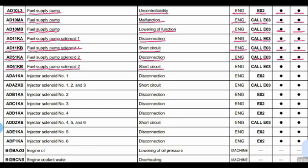Code AD51KB: the part is fuel supply pump solenoid 2 and the problem is short circuit. Controller is the engine controller. Action code E03. Lamp will blink and beep comes from the buzzer.